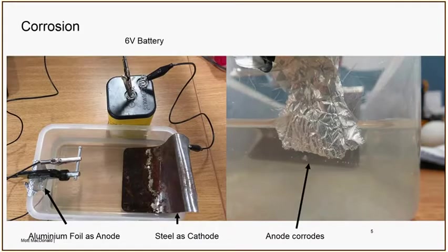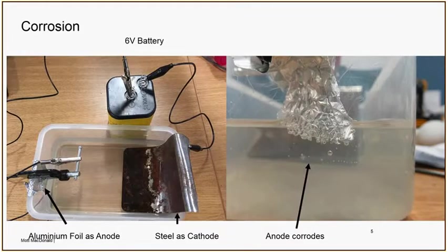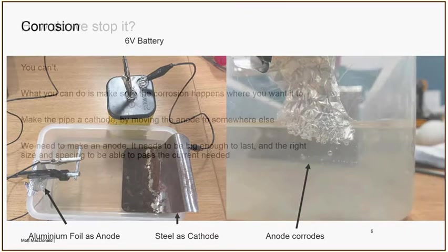Here we've got a battery sat on my desk at work. One terminal is connected to a block of steel, the other terminal is connected to a piece of aluminium foil. If we leave it running for about half an hour we can watch the aluminium foil — there's a close-up picture on the right-hand side — get smaller and smaller as the current passes and the aluminium dissolves. That's corrosion. It's only the aluminium that's submerged that's corroding, so you need a continuous electrolyte and two different metals giving you a voltage. And that's pretty much all you ever need to know about corrosion.